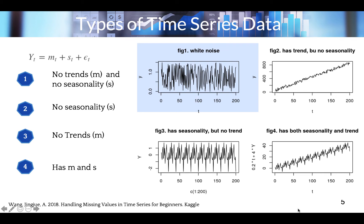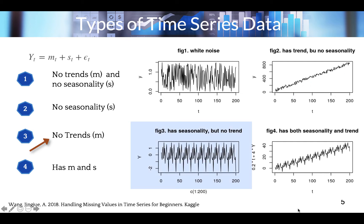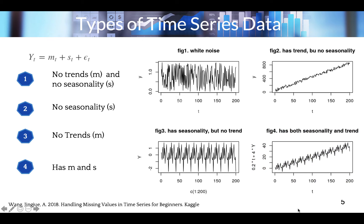Figure one is an example of white noise. Two: we have trend but no seasonality — figure two shows a steady upward increase. Three: we have no trend — figure three shows the oscillation of data in the form of waves. Four: we have both trend and seasonality — in figure four, data points are increasing but also continue to fluctuate.